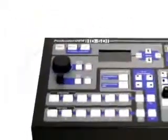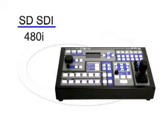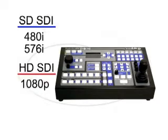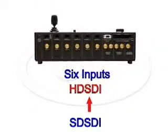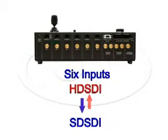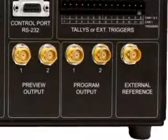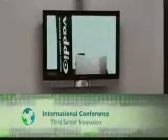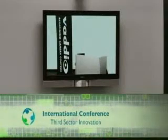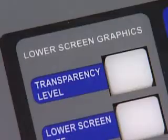ProductionView HD-SDI will accept SD-SDI signals in either 480i or 576i, as well as HD-SDI signals at 1080p, 1080i, or 720p through the six inputs on the back of the console. All inputs can be up-converted or down-converted to either SD-SDI or HD-SDI to the outputs. In addition, an external reference input is available to genlock the preview and program outputs of ProductionView HD-SDI to another switcher or router.